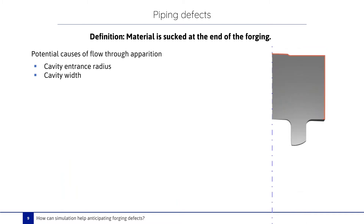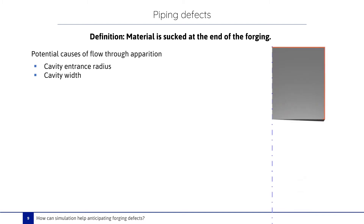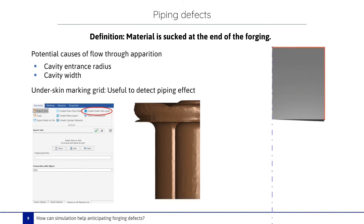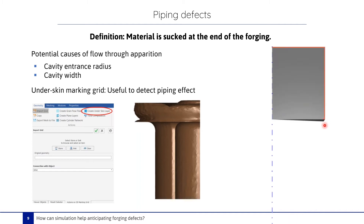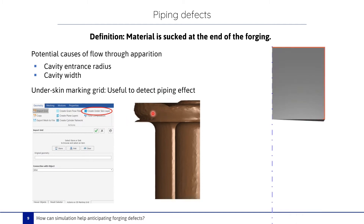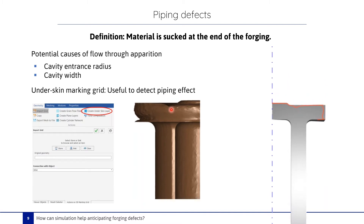Let's go to another defect: the piping defect or flow-through. It appears when the material is sucked at the end of the forging. In this case of extrusion, the potential causes of the flow-through occurrence are due to the geometry of the cavity. In numerical simulation, the under-skin marking grid is very useful to detect this defect. Here in this video, the marking grid is defined in red and we can see the occurrence of the aspiration in the extrusion case in two locations. In this 3D case, we see the piping defect in two zones — on the upper surface of the part and on the corner.